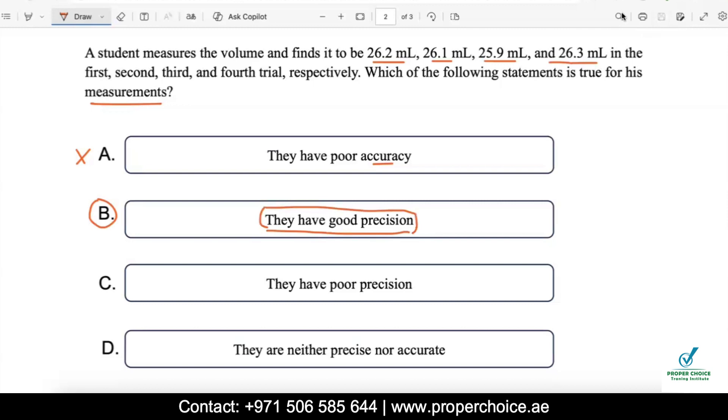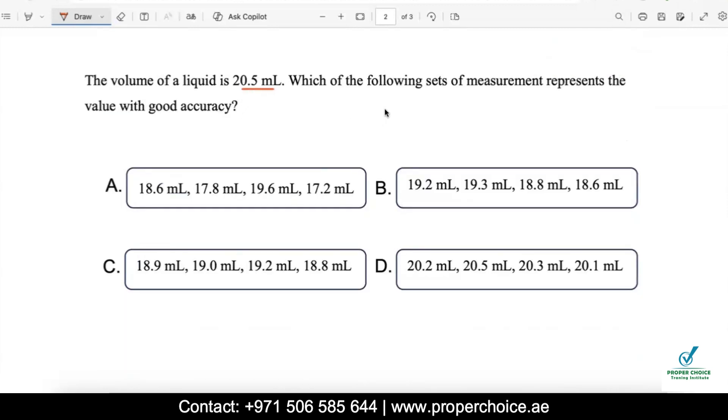The volume of a liquid is 20.5 milliliters. Which of the following sets of measurement represents a value with good accuracy? Look at here, we are comparing the experimental data with the 20.5 liters. Now which are the experimental data closer to 20.5 milliliters? Those are the data with good accuracy. Look at the first option: 18.6, 17.8, 19.6. Here it is 19.2, 19.3. The closest value to 20.5 where we can observe here is in option D: 20.2, 20.5, 20.3, 20.1. They are the most closest to 20.5, so we go with this. Experimental results are more accurate as compared to other three options. So we must go with option D is the right choice here.